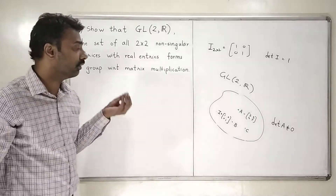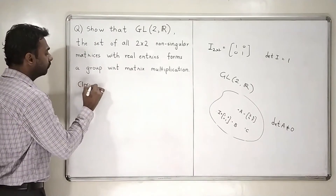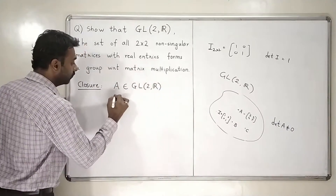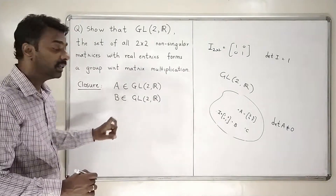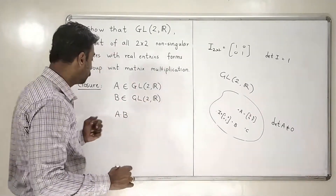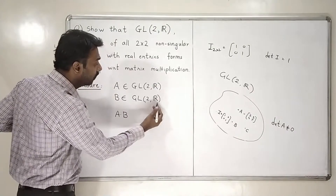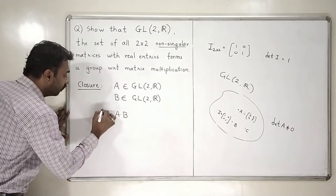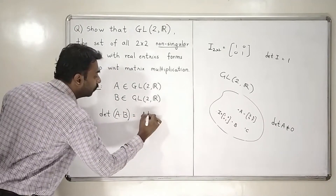So let us now check the first thing, which we always check — that is closure. So if I take A in GL2R and B in GL2R, so both matrices are non-singular 2x2 matrices with real entries. What is A multiplied by B? This A multiplied by B is a matrix which is again non-singular — that we have to check. Obviously this matrix is a 2x2 matrix and will have all entries as real numbers. So the only thing I need to check is whether this matrix AB is non-singular. I will check the determinant. What is the determinant of A into B? We know that determinant of AB is always equal to determinant of A into determinant of B.